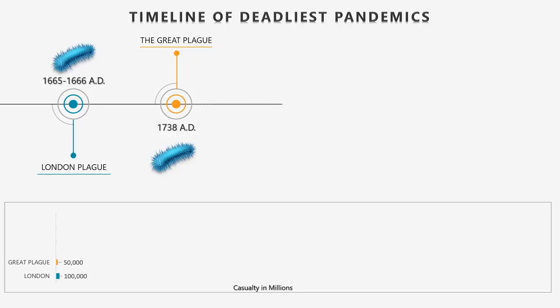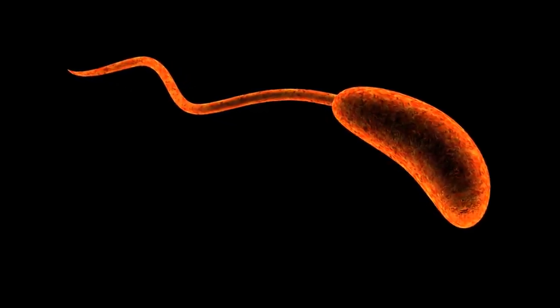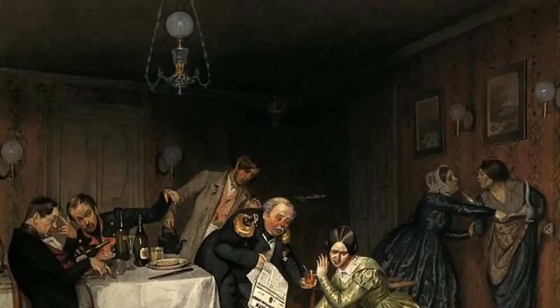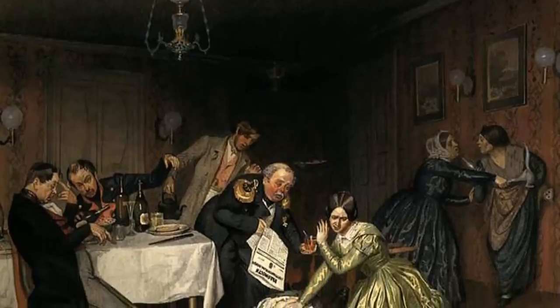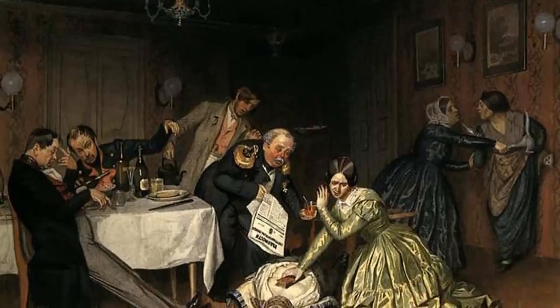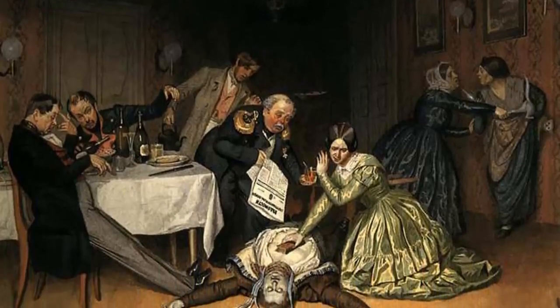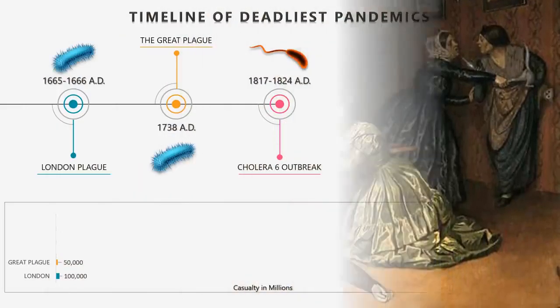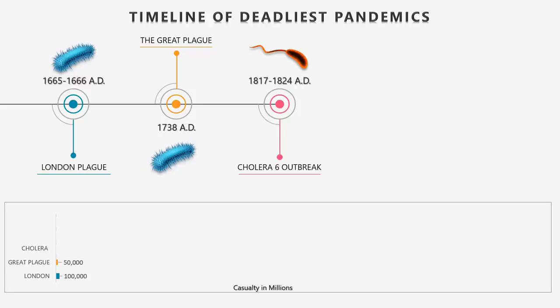At number 13: The Cholera Pandemic of 1817 to 1824. The first known pandemic of cholera originated in the Ganges River Delta in India. The disease broke out near Calcutta and spread through the rest of the country. The exact death toll is unknown, but based on 10,000 recorded deaths among British troops, researchers estimated that hundreds of thousands across India succumbed to the disease. In 1820, 100,000 people died on the Indonesian island of Java alone.